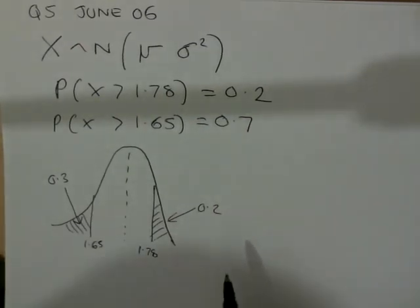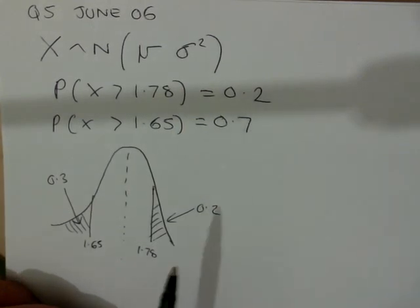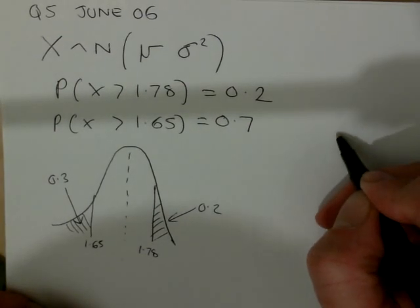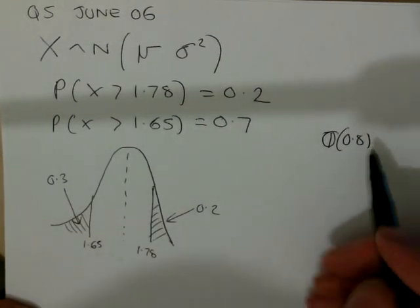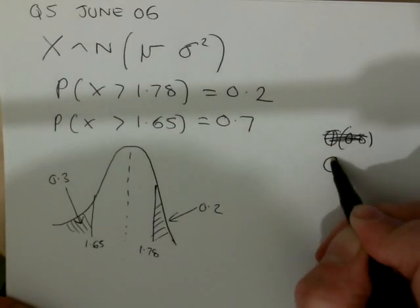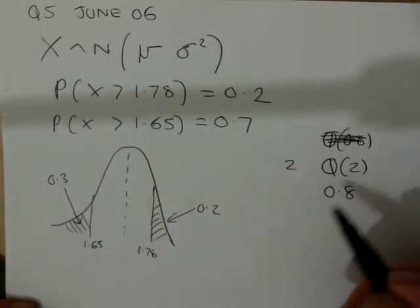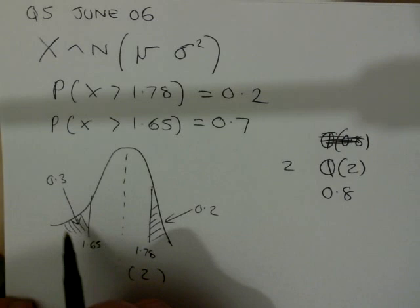We're now asked to find the values of mu and sigma. So, we'll do this by using the information provided and form two simultaneous equations. The probability that x is greater than 1.78, which is 0.2. So, we need to go into the z tables, and we need to find the lookup at 0.8. The reason we have to do that is we can't find 0.2 in the probabilities.